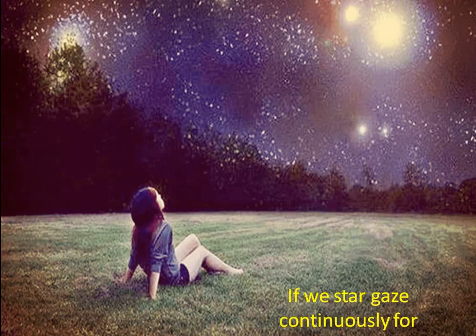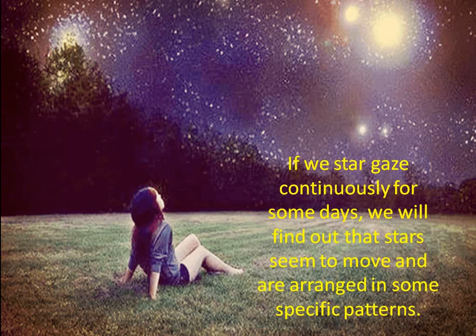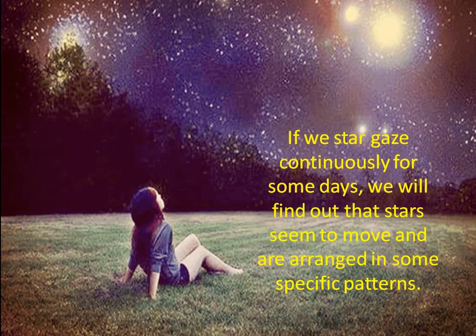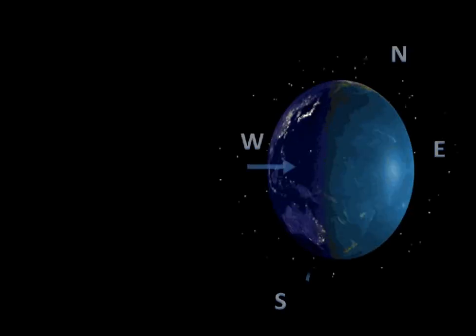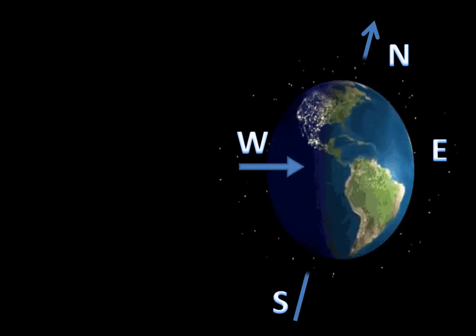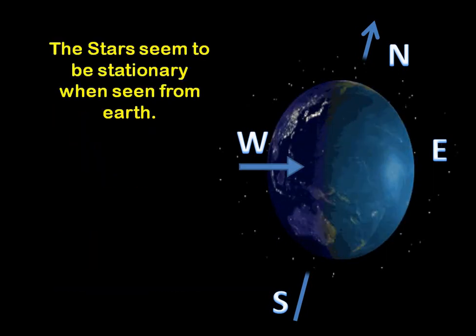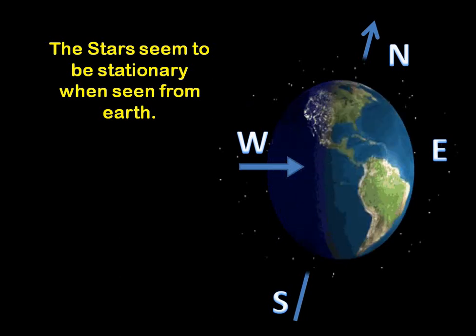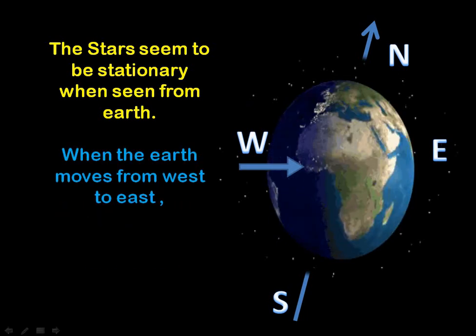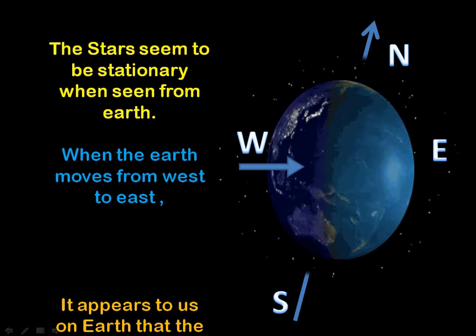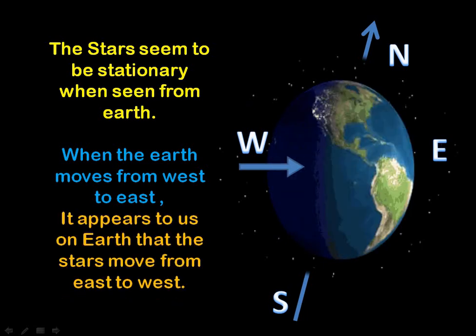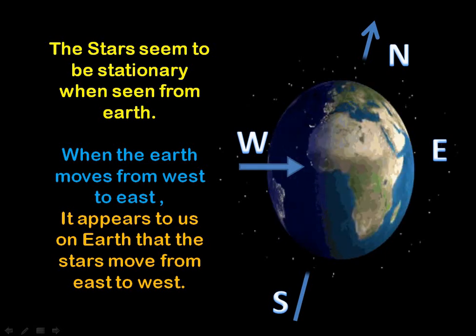If we do star gazing for many days, we will find that the stars seem to move and are arranged in specific patterns. But actually, it is our Earth that is moving — from west to east, as we covered in the last session. The stars appear stationary when seen from Earth, but when the Earth moves from west to east, it appears to us that the stars are moving from east to west — in the opposite direction.